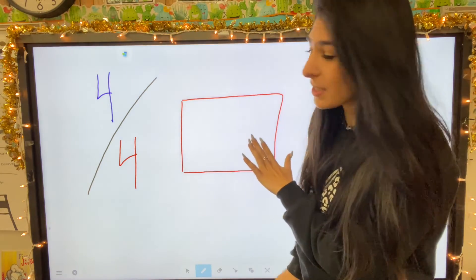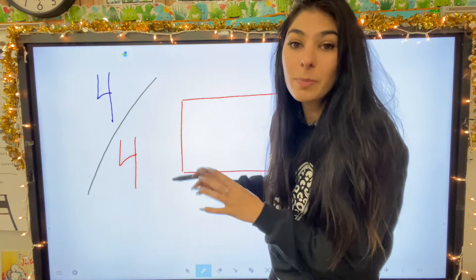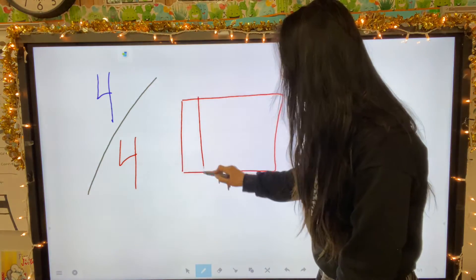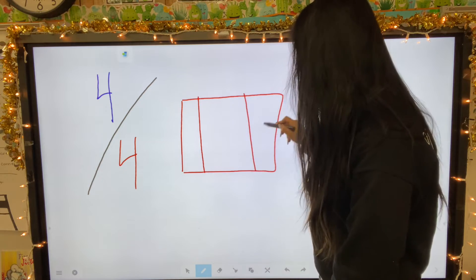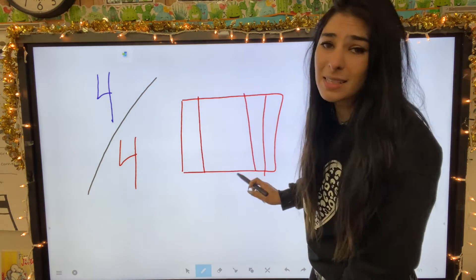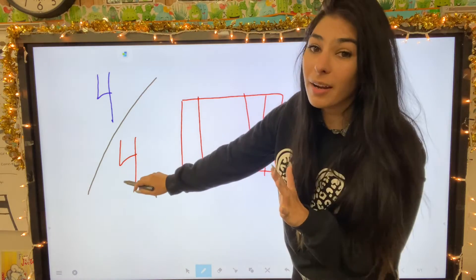Now, when you're cutting these pieces up into a fraction, all of the pieces have to be equal size. I can't do this and then this and then this. Even though those are four pieces, they're not equal. Therefore, it is not a fraction.